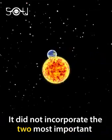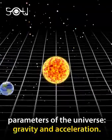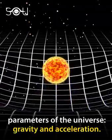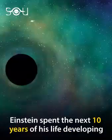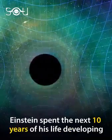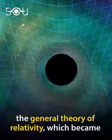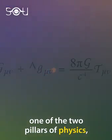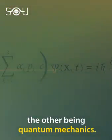However, Einstein realized that this theory was incomplete. It did not incorporate the two most important parameters of the universe: gravity and acceleration. Einstein spent the next 10 years of his life developing the general theory of relativity, which became one of the two pillars of physics, the other being quantum mechanics.